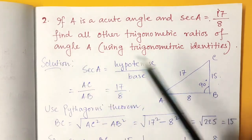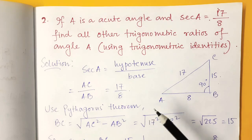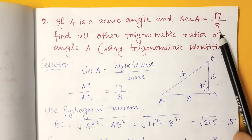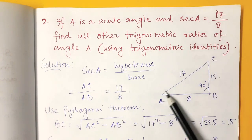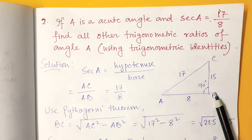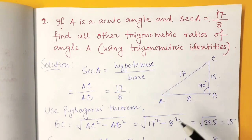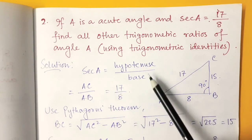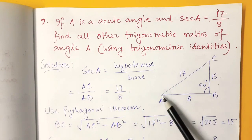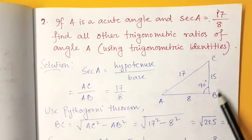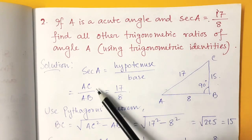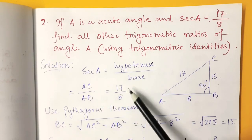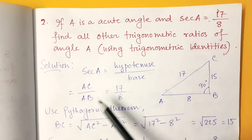This is problem number 2, which is exactly similar to the previous problem. Here given is A is an acute angle and sec A is 17 by 8. Consider this triangle ABC with angle 90 and angle A. We know that sec A is hypotenuse by base, so it is AC by AB. Given that sec A is 17 by 8, so AC is 17 and AB is 8.